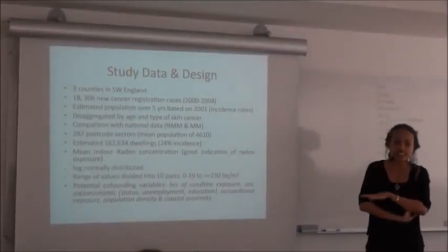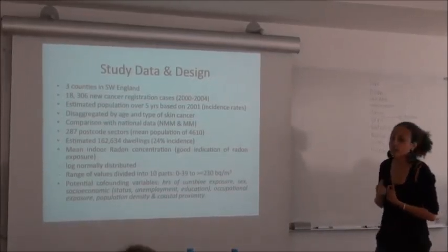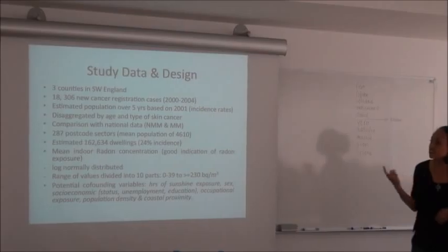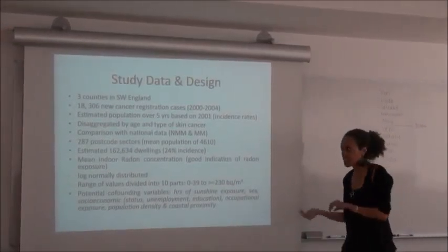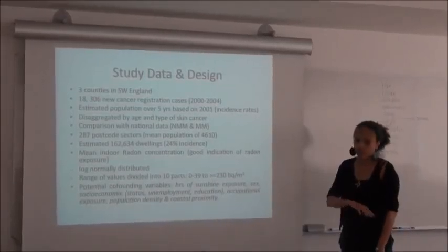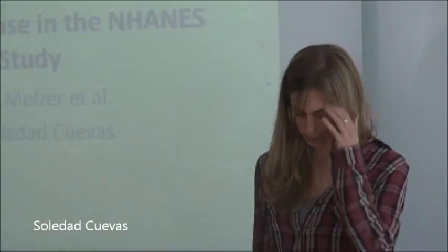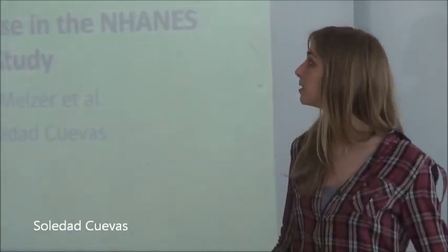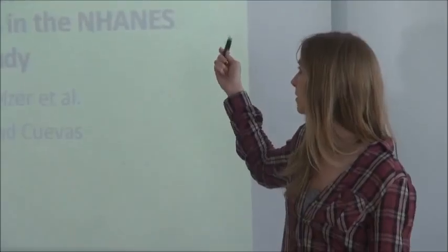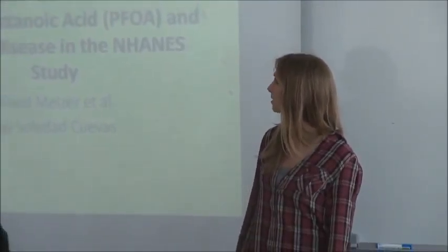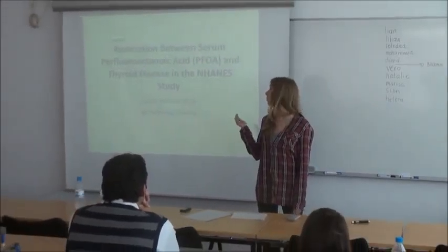To calculate the incidence rates, they had to also have population figures over the five years, but they only had 2001 data, so they had to estimate populations for the average four years based on the previous growth phase. We will see how the authors used a multivariate logistic regression analysis to determine the relationship between these chemical substances and the probability of having thyroid disease.